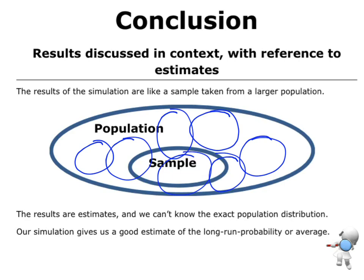That's one of the big ideas here: our results are only estimates. We don't know the exact population distribution. We don't know exactly what the probability in our population is, but we can know the estimate. This simulation gives us a good estimate of the long-run probability or average.